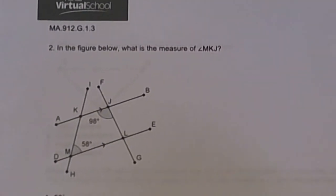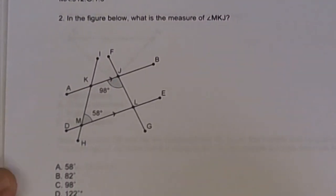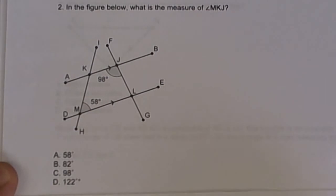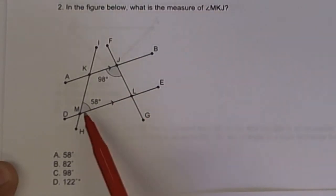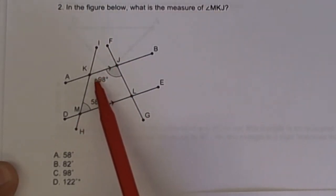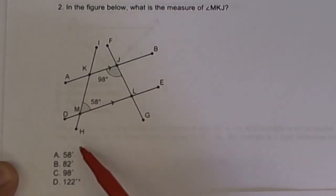Number two. Pause the video, draw the diagram, and let's take a look at it. In the figure below, what is the measure of angle MKJ? So angle MKJ is this one right here. Notice that the lines are parallel. So these are going to be same side interior. So remember, same side interior add up to 180. Number two, pause the video if you have to.